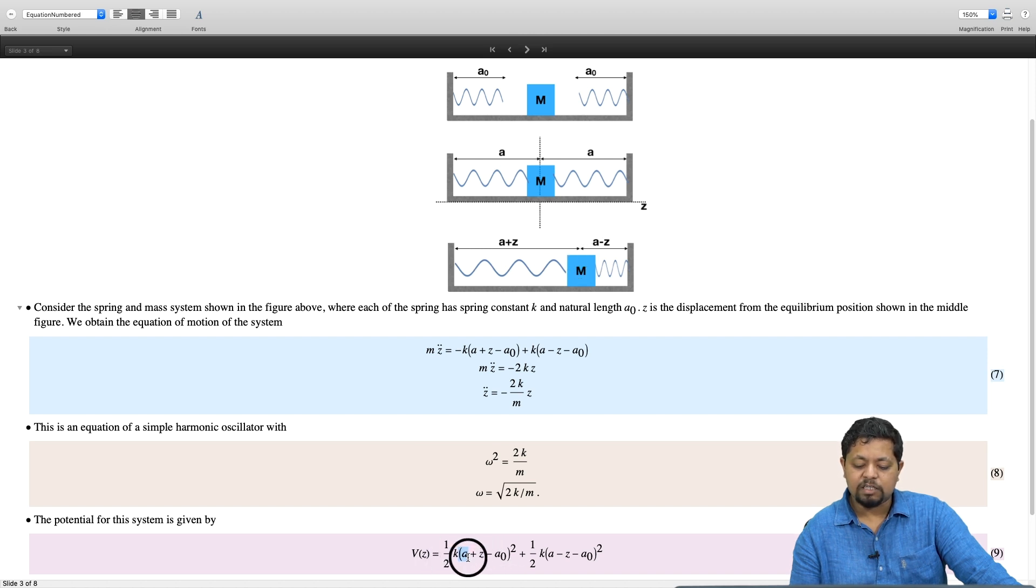Squaring that, multiplying with one half k gives the potential because of this spring. Similarly, potential because of this spring is one half k (a minus z minus a naught) whole squared. My net potential turns out to be the sum of the two terms.